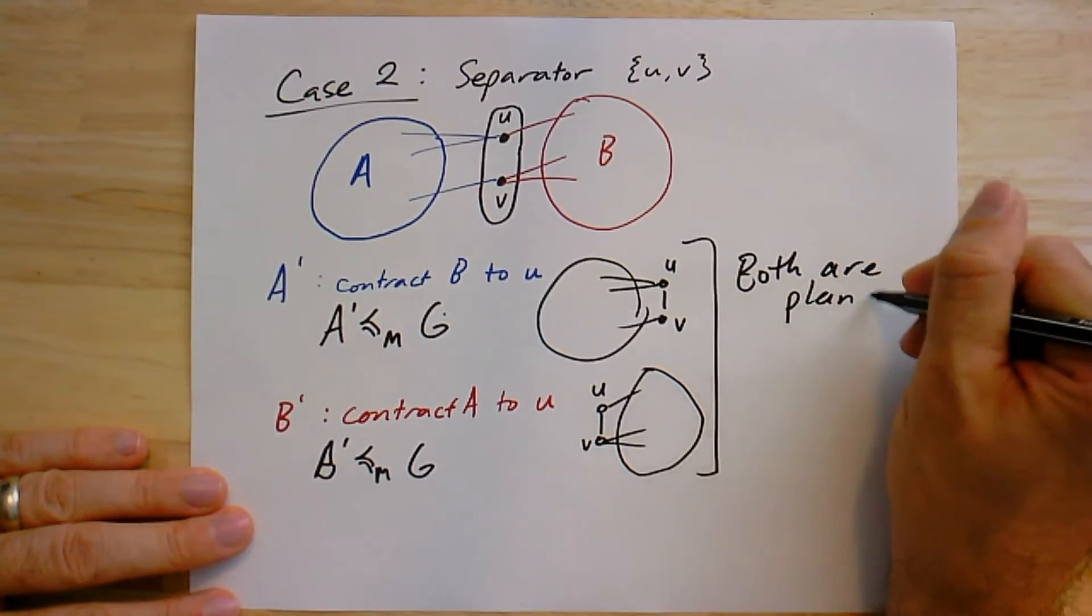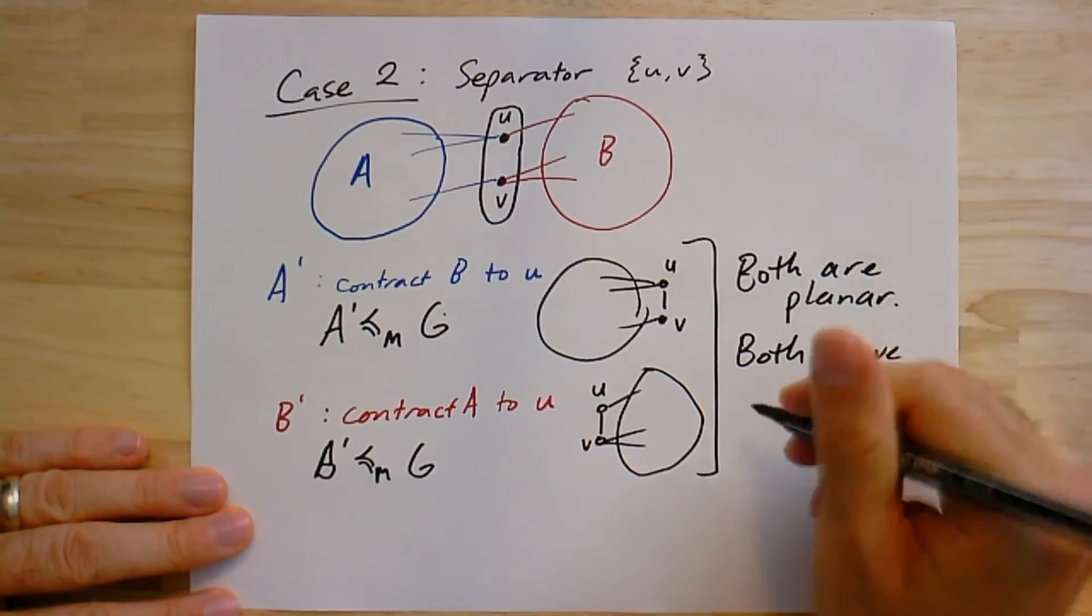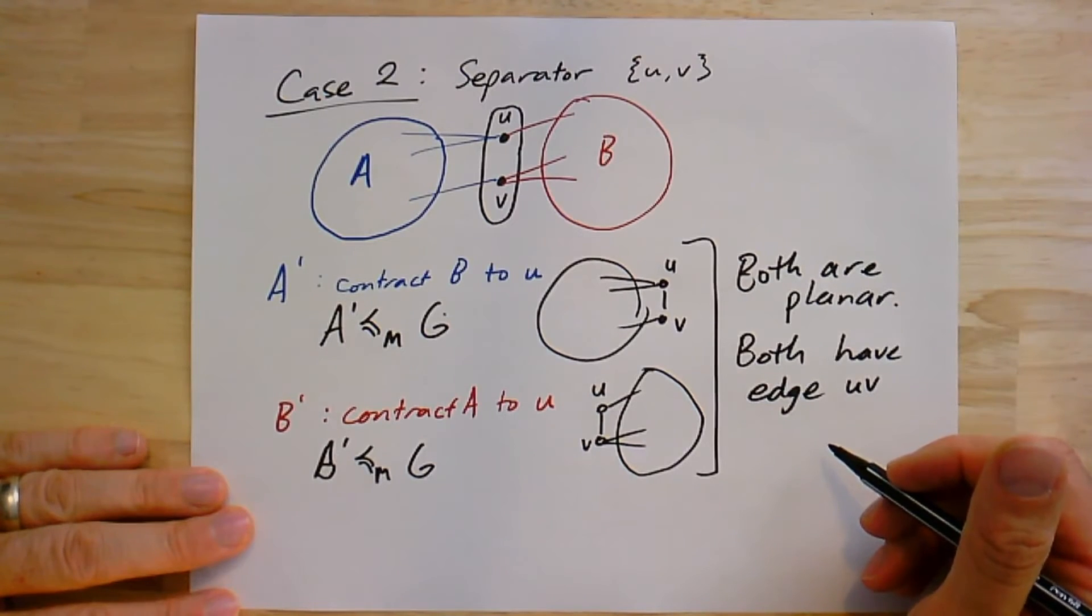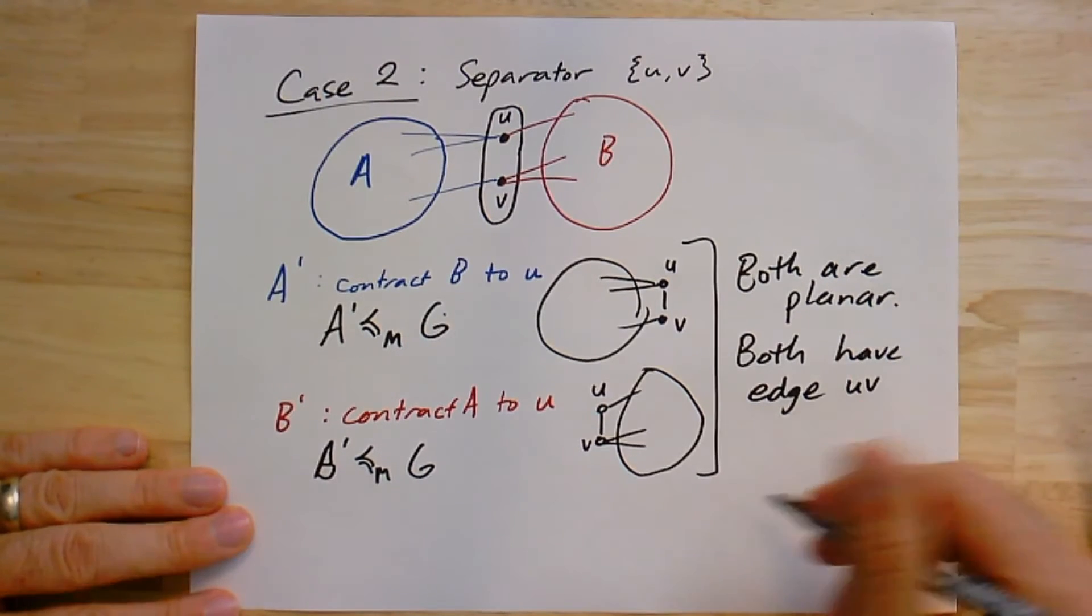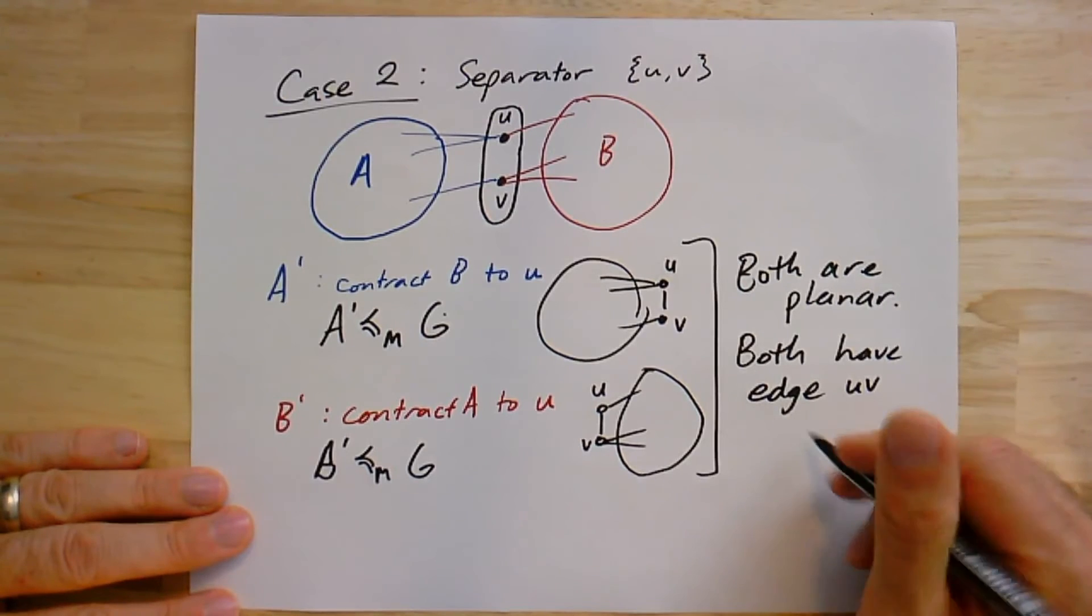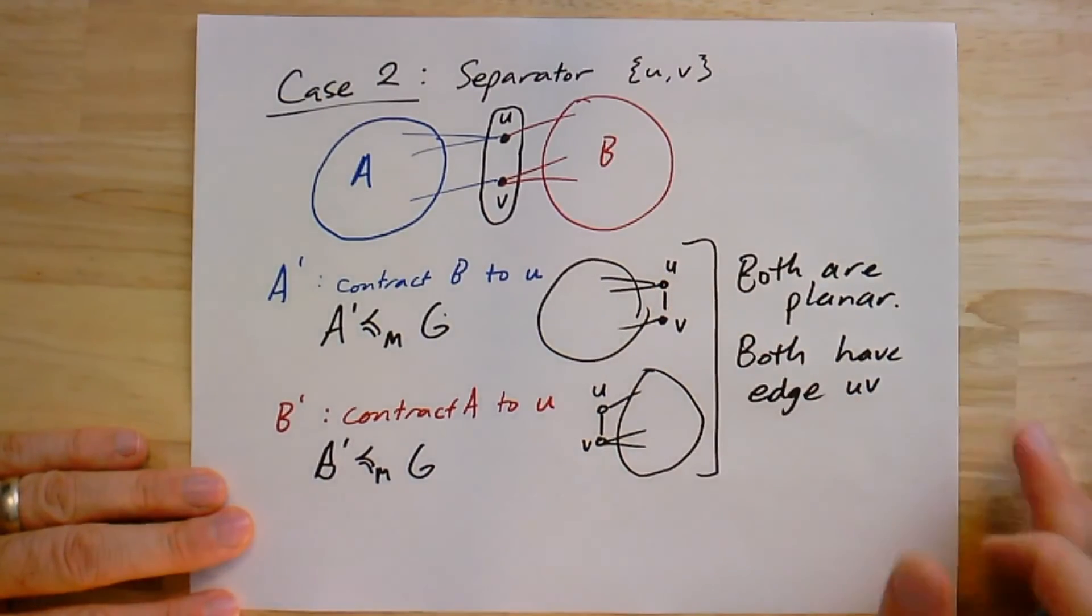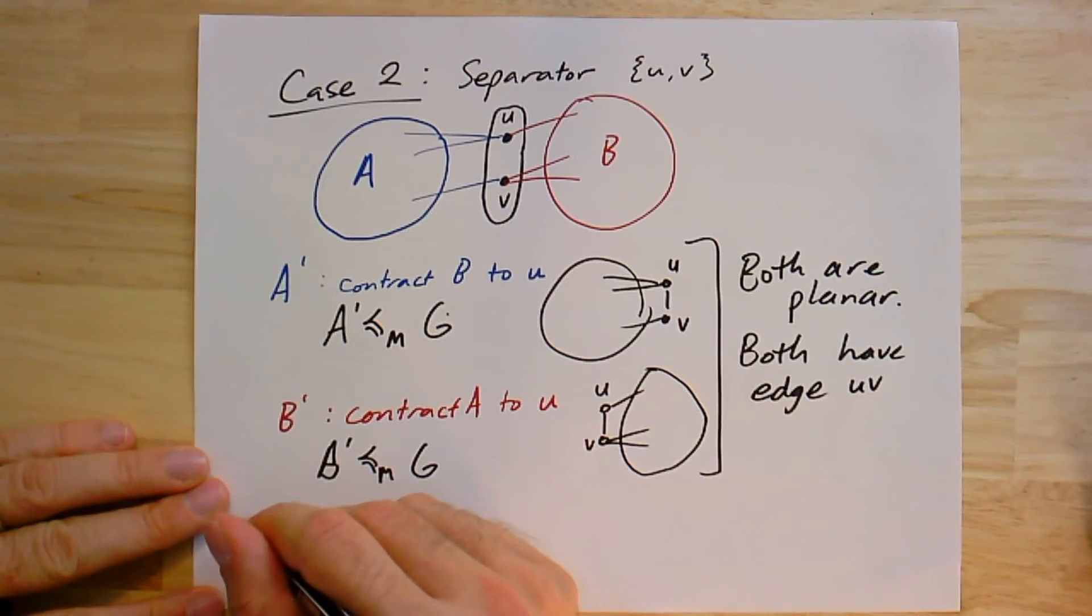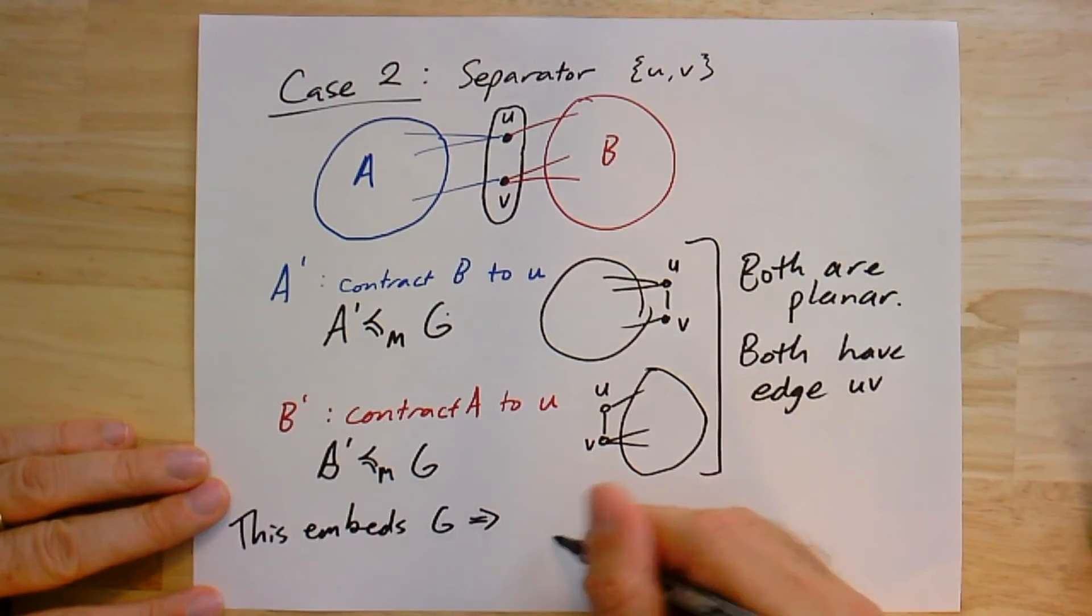We can use our stronger version of Fary's theorem to embed them so that this edge U, V, which they both have, is an edge on the triangle on the outer face. As a result, we can embed them so that those edges overlap. You can think of it as me taking this graph here, just moving it, and plopping it down right on top so that U matches up with U and V matches up with V. Gluing them together gives an embedding of G. But if G has an embedding, then it's planar. And again, we get exactly the same contradiction.